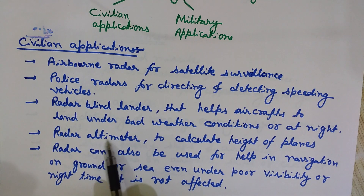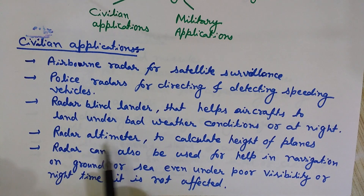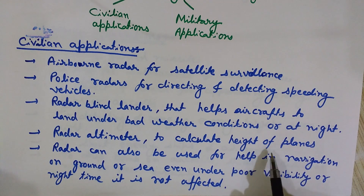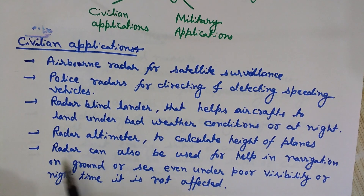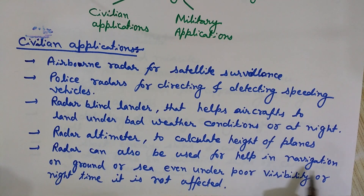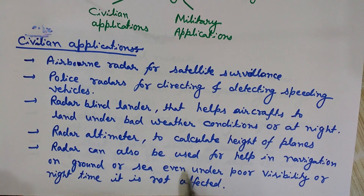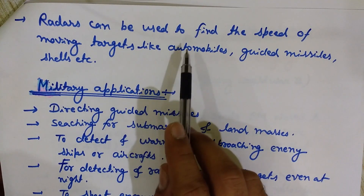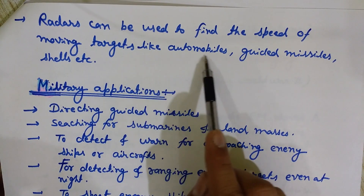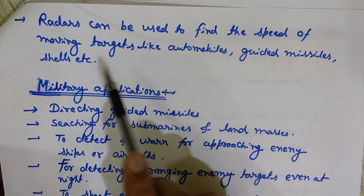Radar altimeter is used to calculate the height of planes — 'altimeter' meaning equipment to measure altitude. These radars can find at what height the plane is moving. Radar can also be used for navigation on ground or sea, even in poor visibility conditions, enabling safe navigation on both mediums.